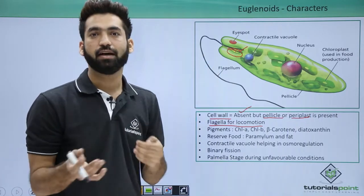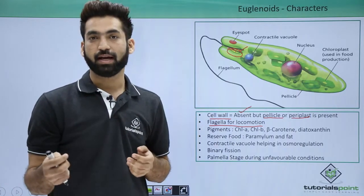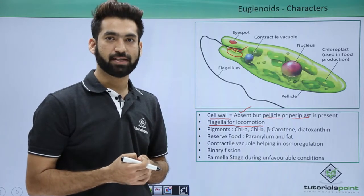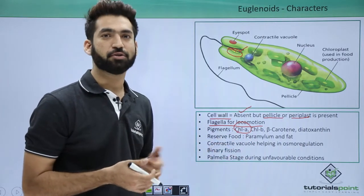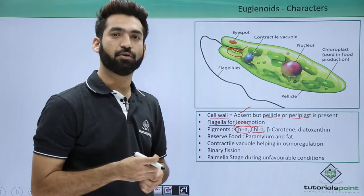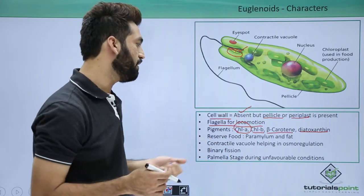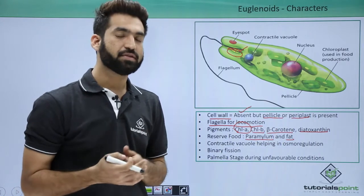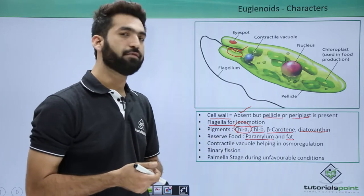Because both flagella are different in size, euglenoids are called heterokont organisms, just as dinoflagellates were also heterokont due to having two different flagella. Regarding pigments, they have chlorophyll A (common to all photosynthetic protists), chlorophyll B, beta-carotene, and diatoxanthin — unlike diatoms and dinoflagellates which have chlorophyll C. The reserve food material is paramylon and fat. Note that diatoms store chrysolaminarin while euglenoids store paramylon.